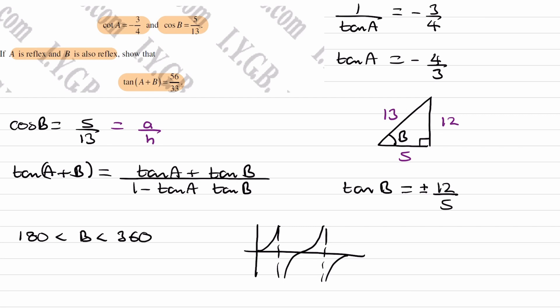Between 180 and 360, we have these two parts of the graph here. So actually from that, if B is between 180 and 360, then tan B could be either positive or negative.